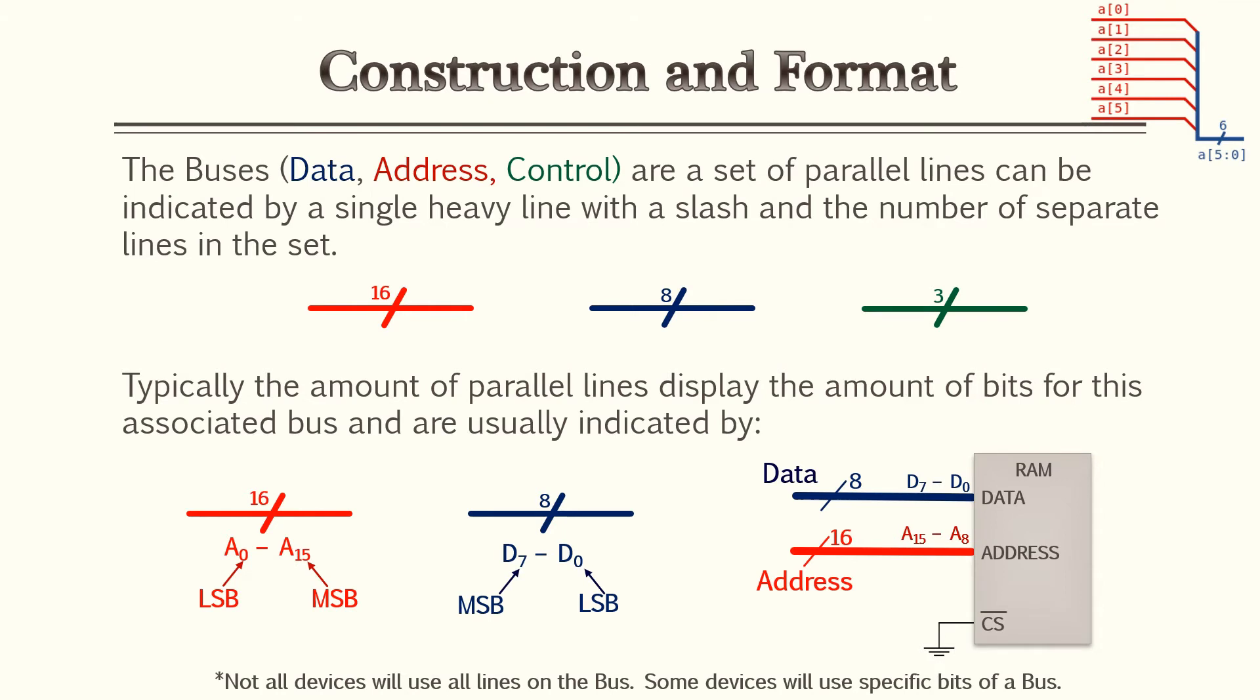For the last slide I probably saved the most important information for last. Your construction and format of the microcontroller. In the previous slide we talked about the three different buses. Your data bus, address bus, and control bus. Now we need to understand how they're formatted on paper. Your buses are a set of parallel lines and can be indicated by a single heavy line with a slash and the number of separate lines in that set. So in the illustration we have a red, blue, and green bus. Your red bus has a slash and then a 16. That tells you there are 16 parallel lines. Eight, there's a slash with the blue there. There's eight parallel lines and then with the green we have three.